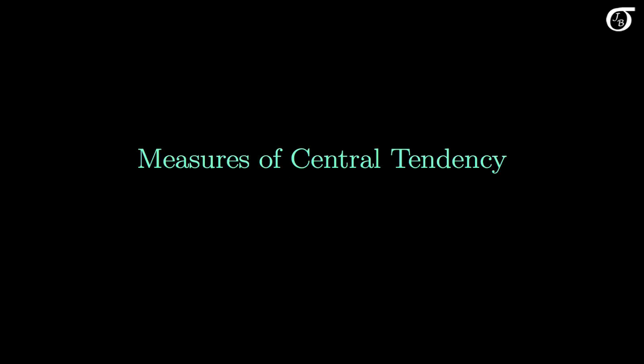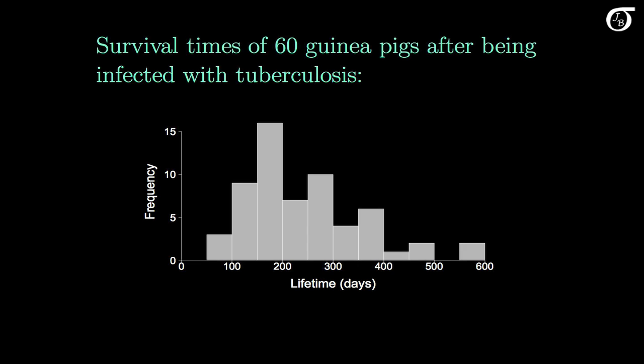Let's take a look at an introduction to measures of central tendency. Here's a histogram of survival times in days of 60 guinea pigs that were infected with tuberculosis. This was from an experiment investigating the effect of tuberculosis on guinea pig survival.